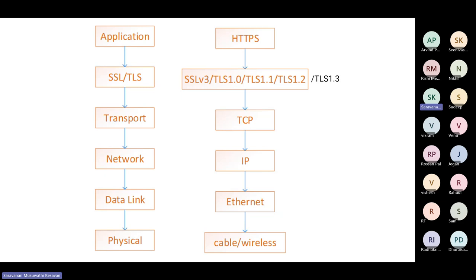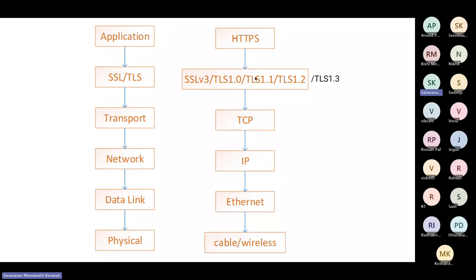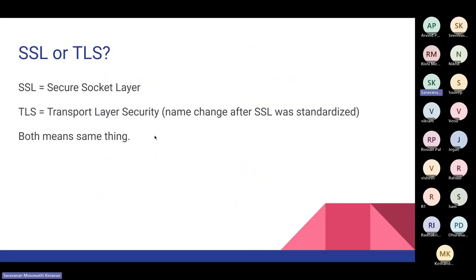In today's talk we will purely focus on TLS 1.3. If you want to protect your application data — taking HTTPS as an example — it hands over the data to the SSL layer, which adds all the necessary security mechanisms to provide confidentiality, integrity, and authenticity, then hands it over to TCP. SSL stands for Secure Socket Layer, and TLS stands for Transport Layer Security. Both mean the same thing — I'll explain the naming history shortly.